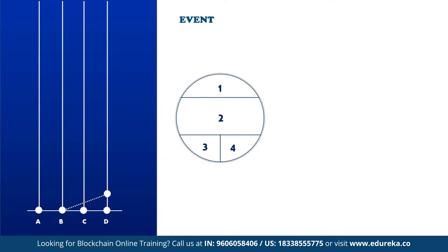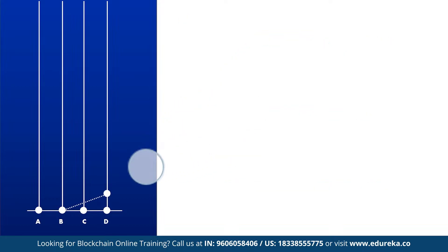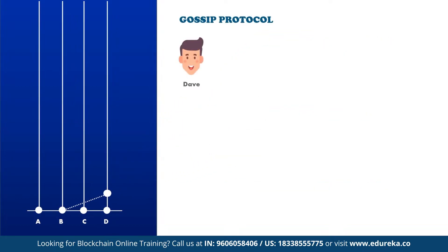Dave's new event contains a timestamp and digital signature, as well as the transaction itself. An event is a data structure containing the two hashes of the events below itself — in this case, the self-parent hash (Dave's first event) and the other parent (Bob's first event). Events can optionally contain zero or more transactions that Dave wants to send to the network. Dave puts in the timestamp of when he created the event and digitally signs it. When this event is gossiped, the signature is sent along with it.